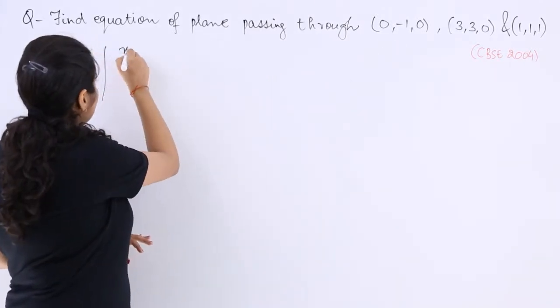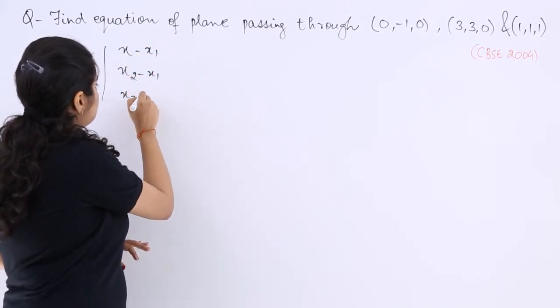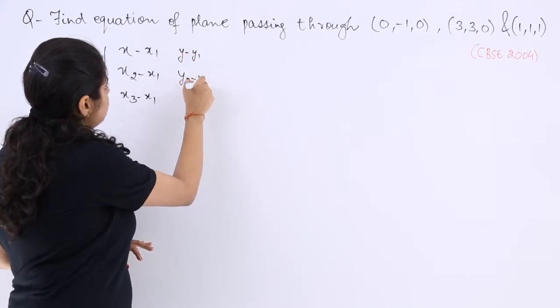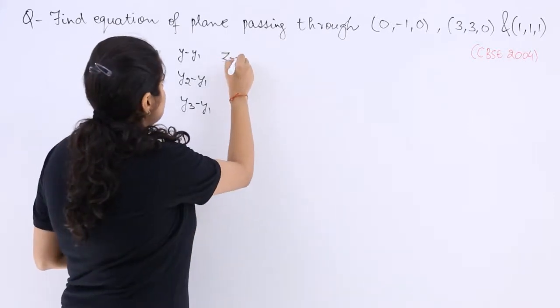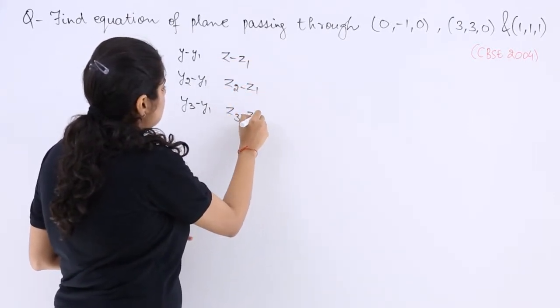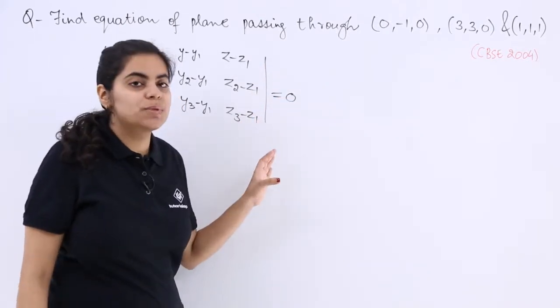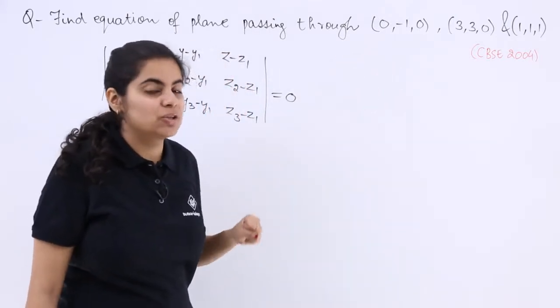So with the determinant approach x minus x1, x2 minus x1, x3 minus x1, y minus y1, y2 minus y1, y3 minus y1, then z minus z1, z2 minus z1, z3 minus z1 is equal to 0. This is the determinant which has to be solved in order to get the equation for the plane passing through three points.